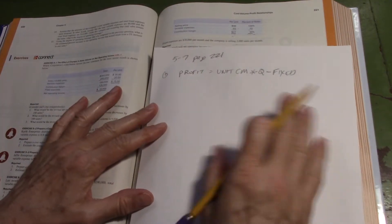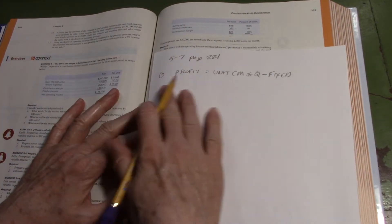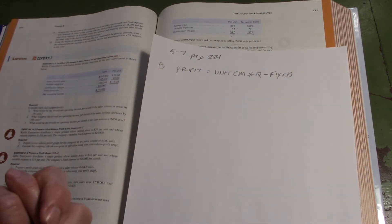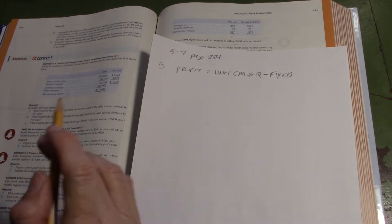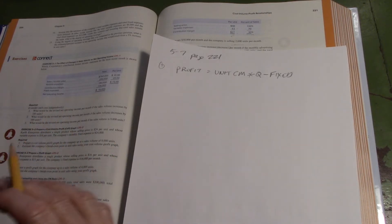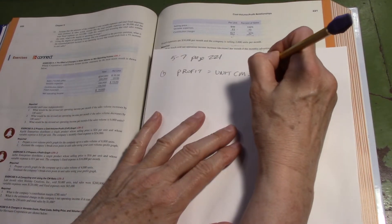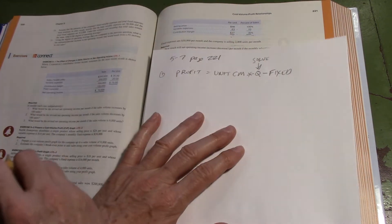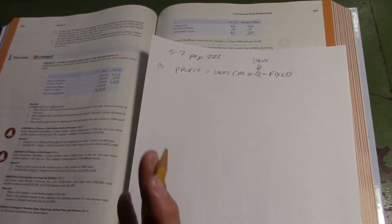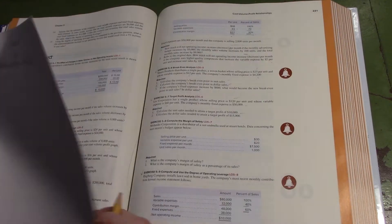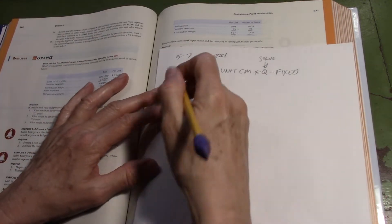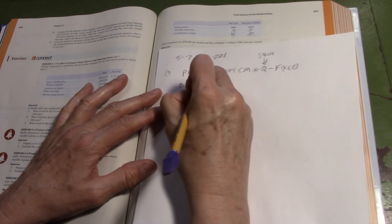I went ahead and wrote down our equation. Profit is still unit contribution margin times quantity sold minus fixed. We're still solving for Q. We want to know what quantity do I need to sell to get to a profit. The only difference is we're going to put our target profit there instead of zero. In this case, the target profit is $10,000.